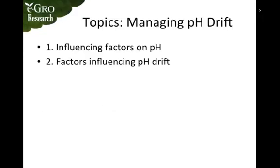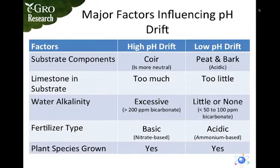The two main areas we're going to cover are the factors influencing pH and the factors that influence pH drift of plants. Here is a graphic showing some of the main factors. Looking at substrate components: coir makes pH drift higher, whereas peat and bark, which are very acidic, make pH go down. Similarly, limestone in the substrate — too much lime and pH goes up, too little and it goes down. That's fairly obvious.